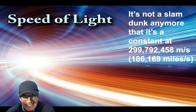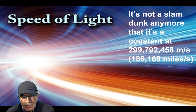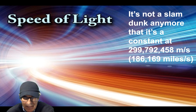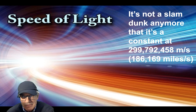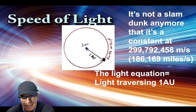The speed of light is not a slam dunk that it's a constant anymore. Some people say even Einstein said, in his later years developing the general theory of relativity, that it wasn't constant depending on gravity. So the idea that it's a fixed constant isn't necessarily true. There are objecting papers — look online — and some people say the speed of light's been changing. There seems to be evidence for that, so it might not be a constant.